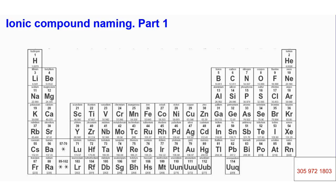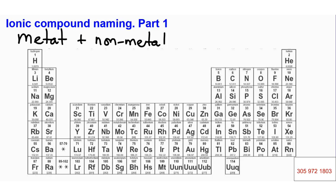Hello. Today we'll be talking about ionic compounds and the naming of ionic compounds. Ionic compounds are made of elements that are metal plus a non-metal. Today we'll look at metals that have a predictable value — that means they have a predictable valence electron or a predictable charge. Let's see how that works.